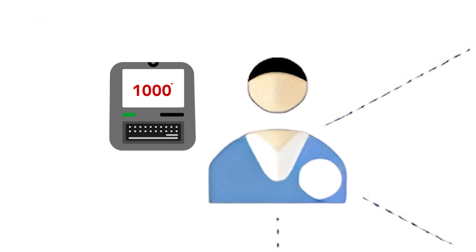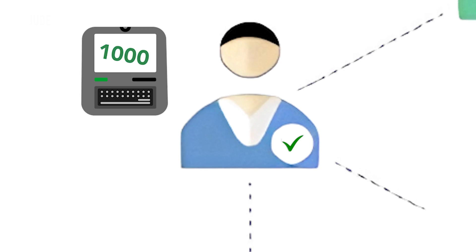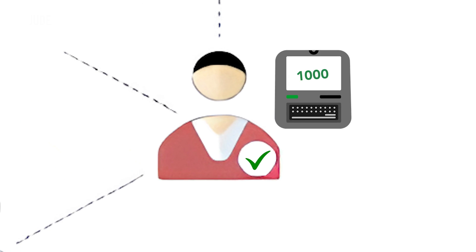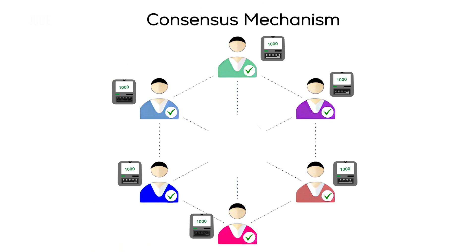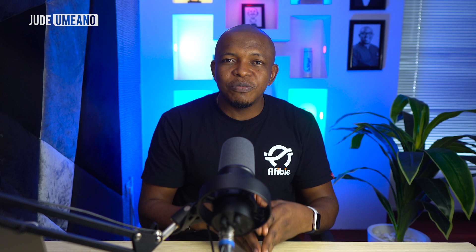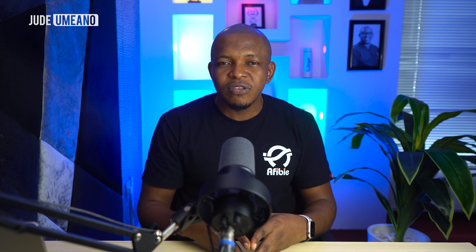This process is similar to the consensus mechanism, where every participant within the network collectively agrees that the transaction being added to the ledger is indeed accurate. It is also exactly how the distributed ledger works.